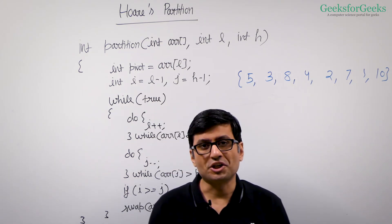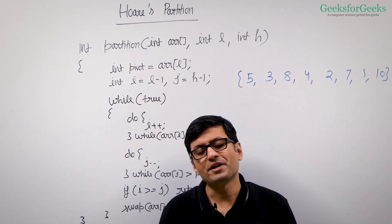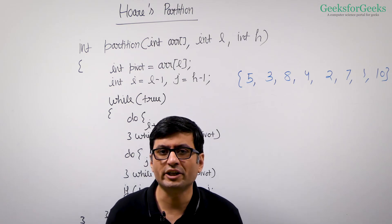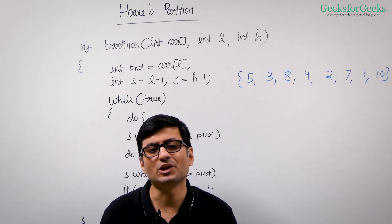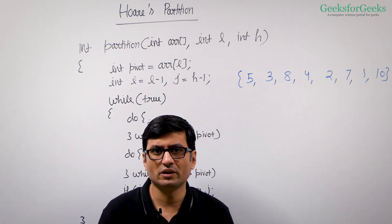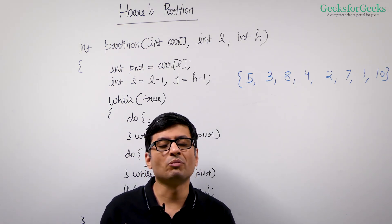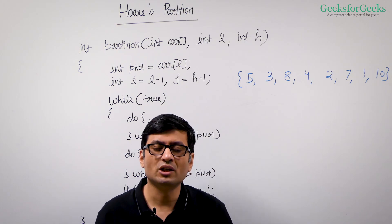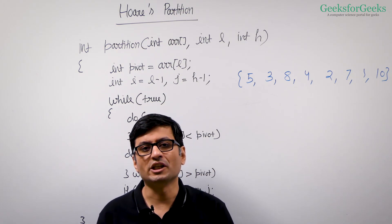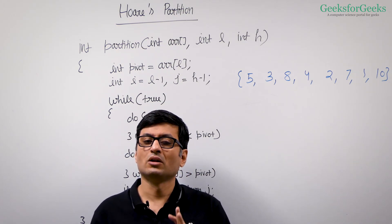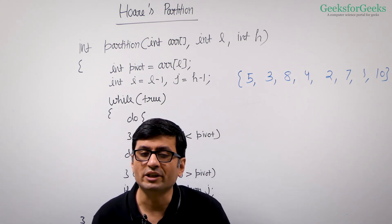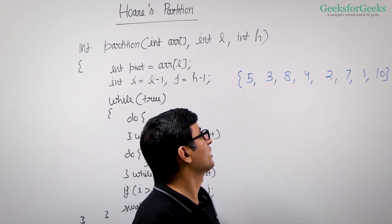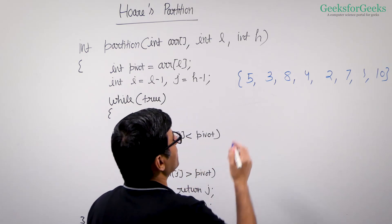In Lomuto partition, by default, we were considering the last element as a pivot. In Hoare's partition, in its typical implementation, we consider the first element as the pivot element. So our pivot is the first element.